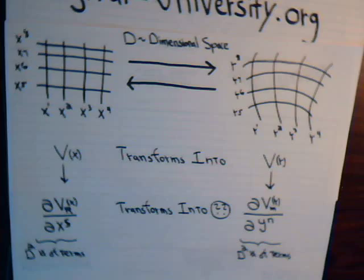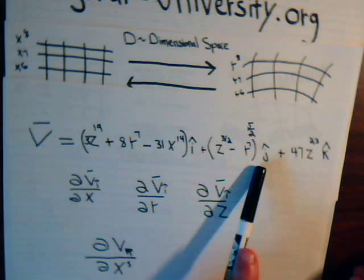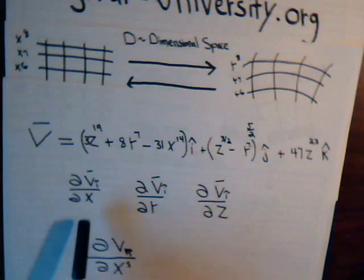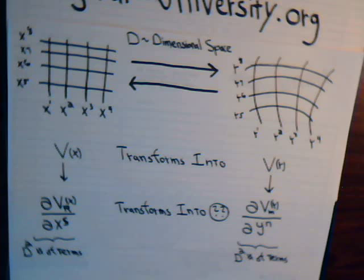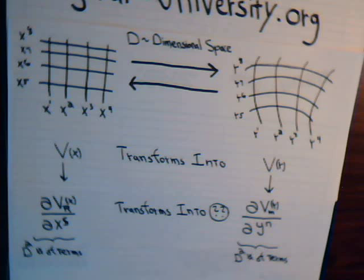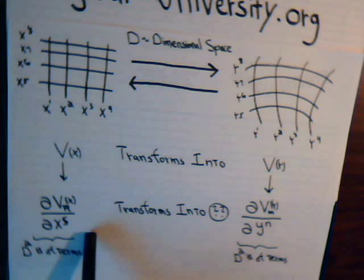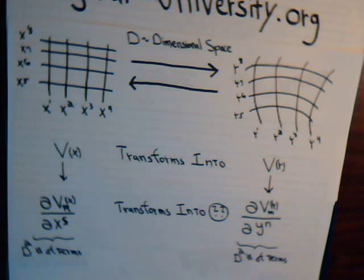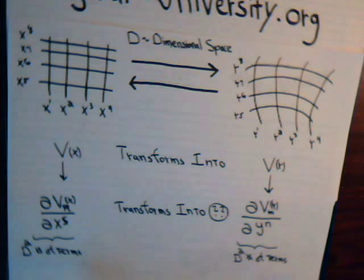Just like we did for the i, j, and k components — for each component, take the derivative with respect to a specific coordinate axis. When we take these derivatives, that gives us a d-squared number of terms. For the first component of the vector, we can take its derivative with respect to x1, x2, x3, all the way to xd, giving us d terms. Do the same for the second component, giving us 2d terms, and keep going until we've done it for all d components — that gives us d-squared terms, each of which is a partial derivative.